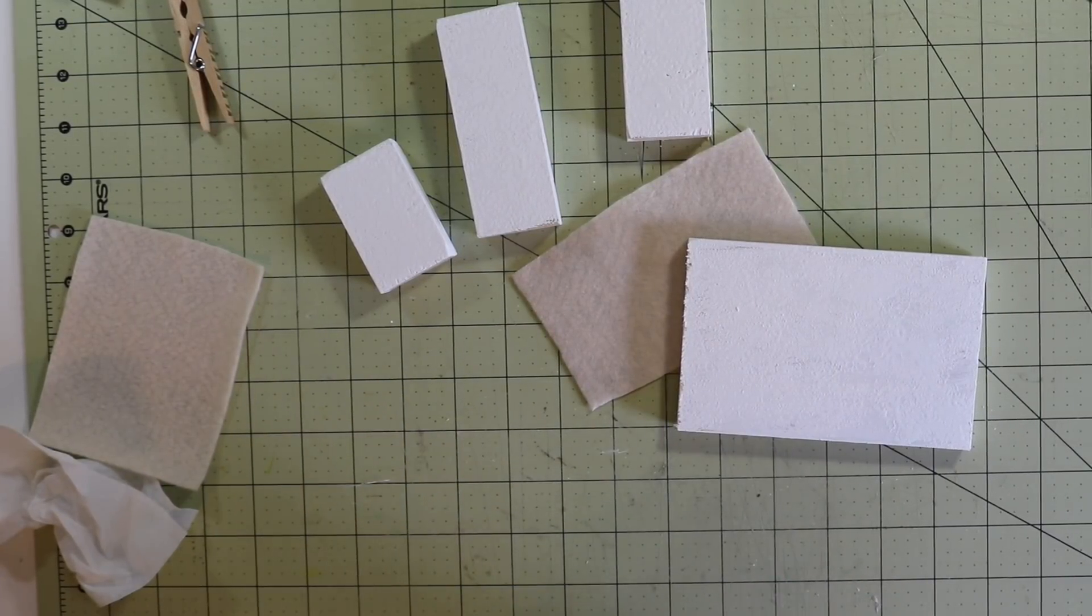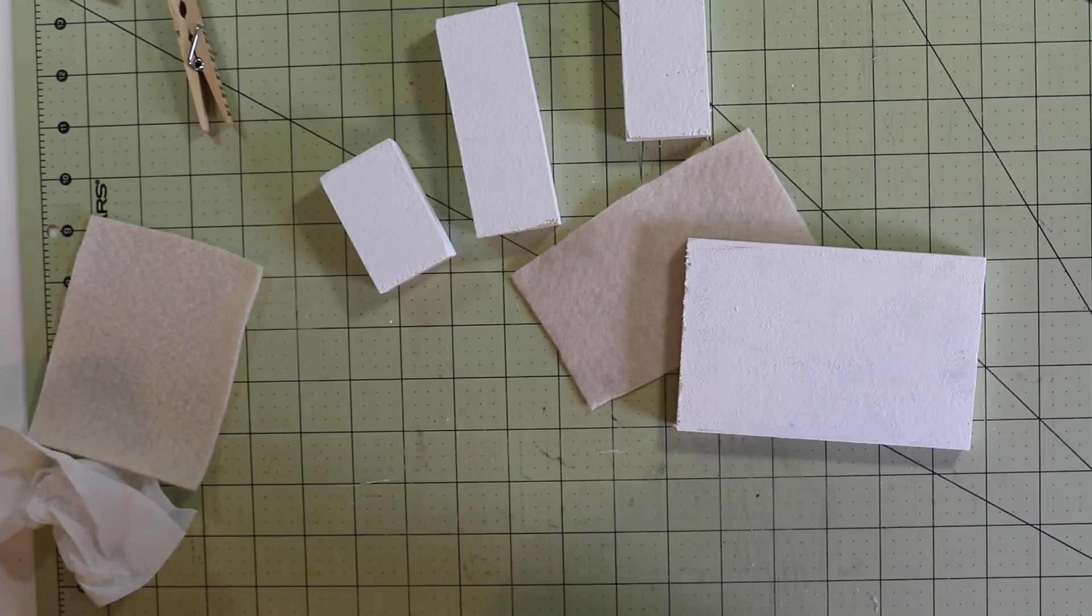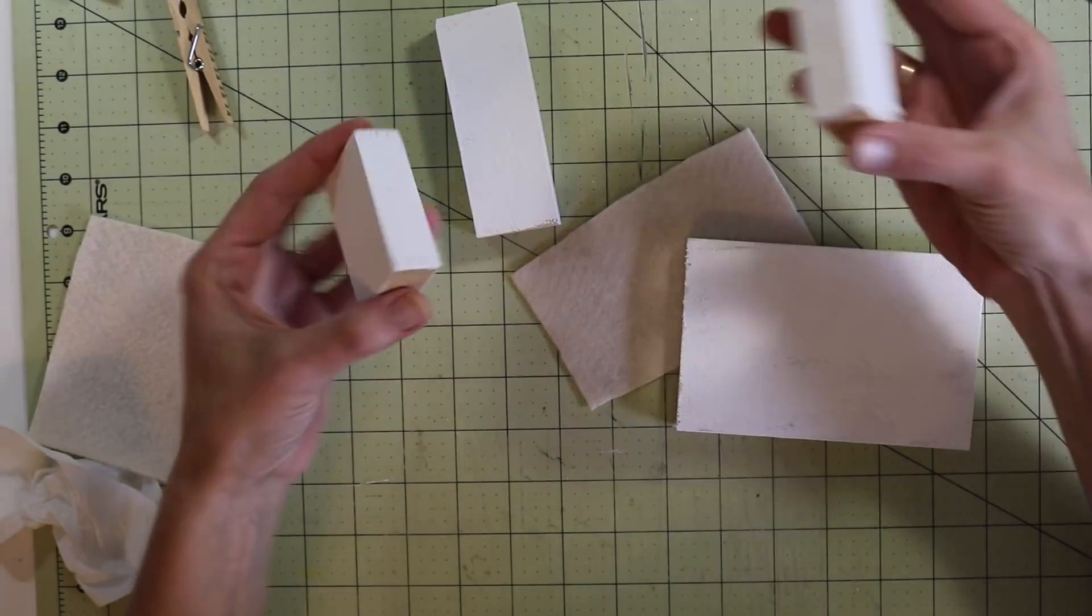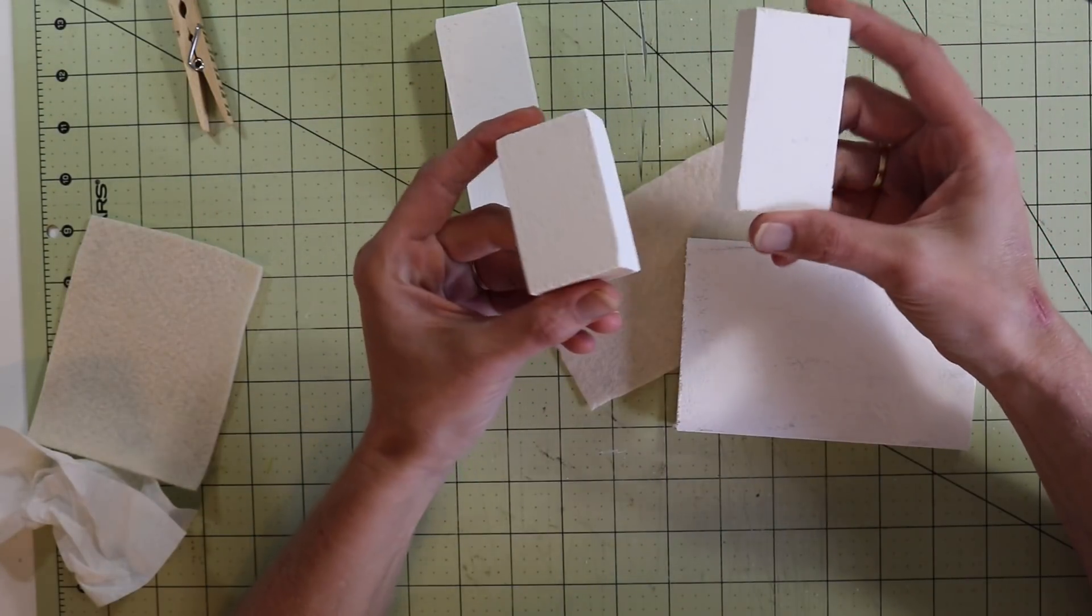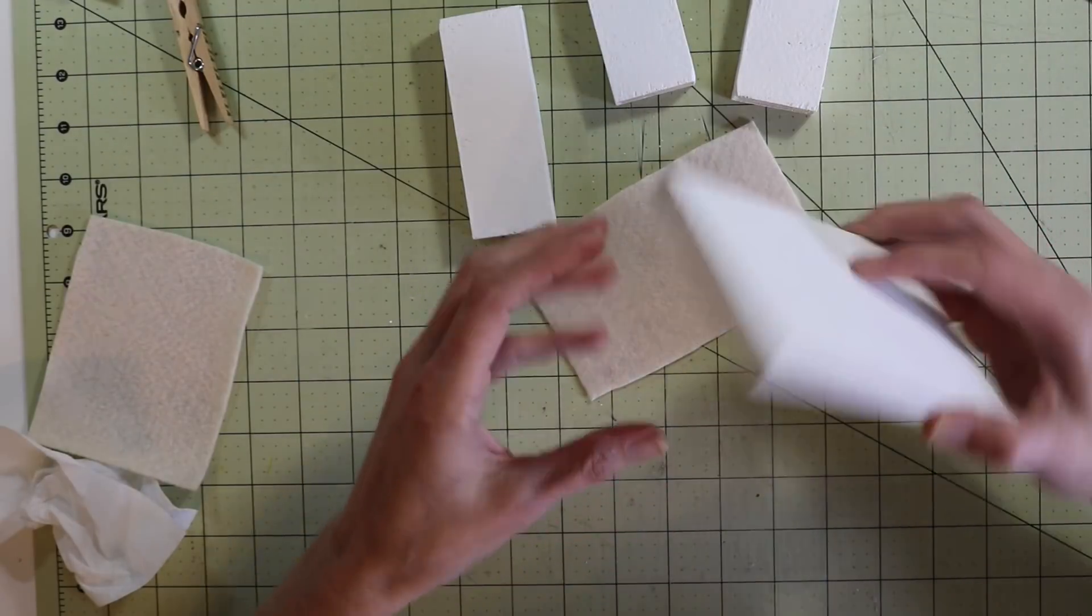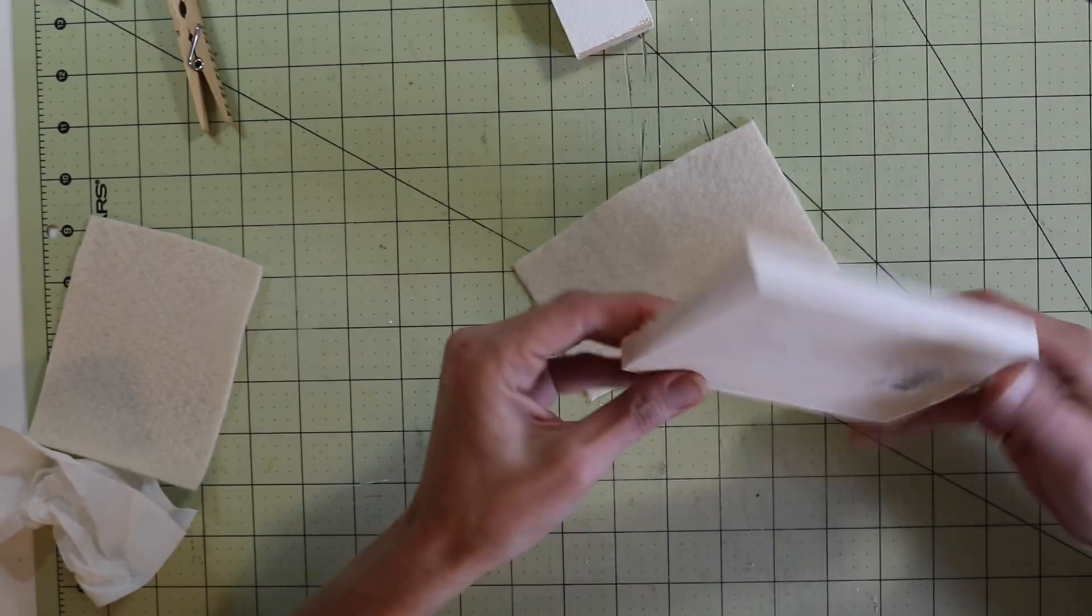Hey guys, it is me Stace. I am back again today with another Sunday with Stace episode, and today we are making little snowmen from these wooden blocks. We just had these in our shed. I have this little base here and I went ahead and painted all these pieces white.